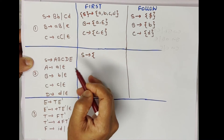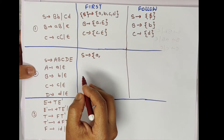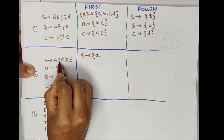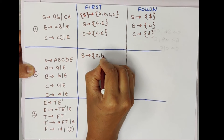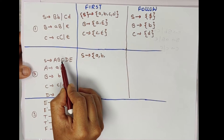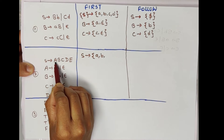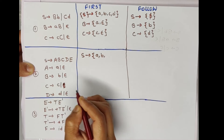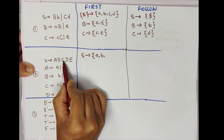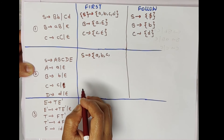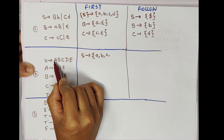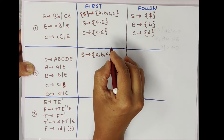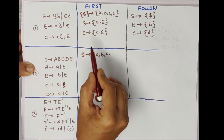A is giving small a and epsilon, so we will take A as a terminal in FIRST(S). If A is epsilon, then the next variable is B. B is giving b and epsilon, so we will add b to the FIRST list of S. If A and B are both epsilon, then we get C. C is not epsilon, so FIRST(S) = {a, b, c}.